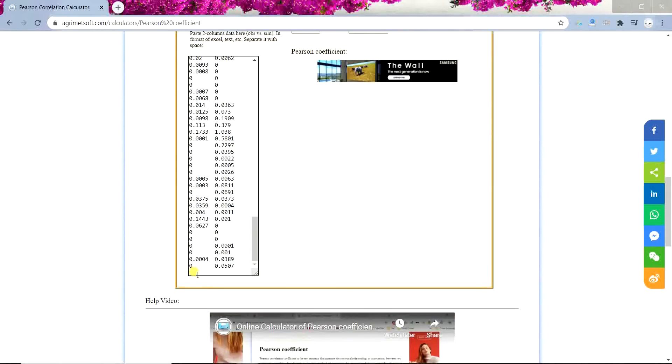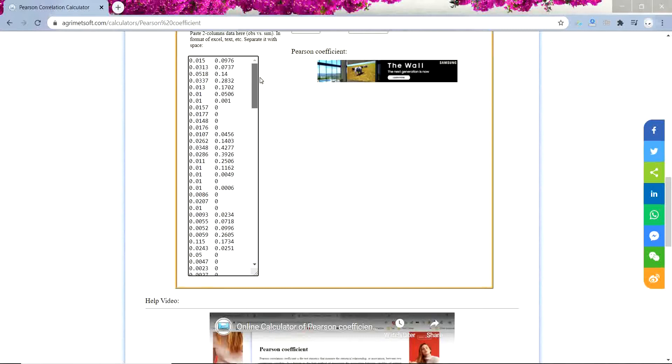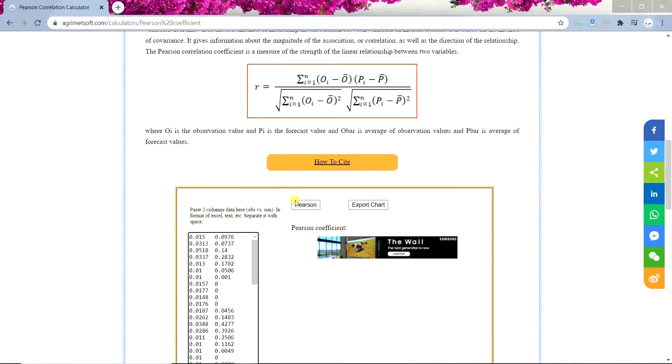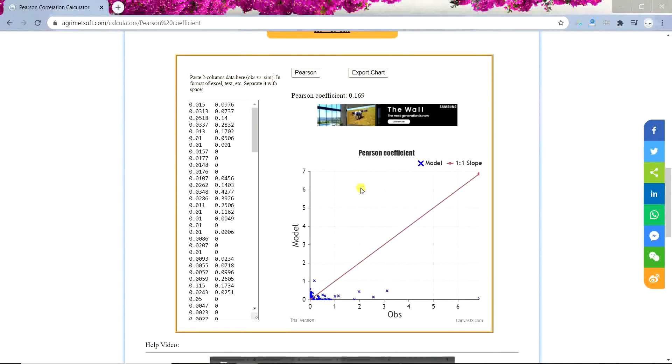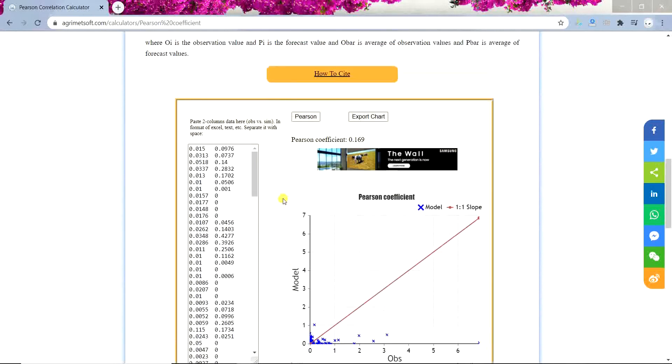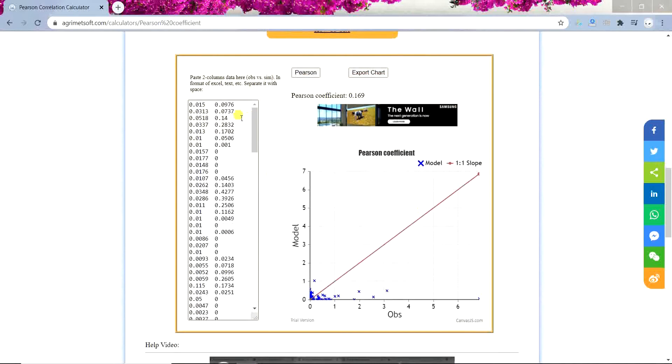And then you don't want to have any empty row so you just go for Pearson and it gives you the chart and you can see the model and the observation. So I just forgot to say, the first column should be observation and the second column should be simulation.